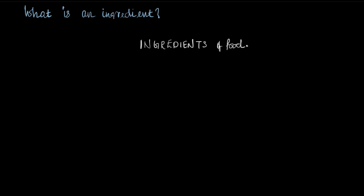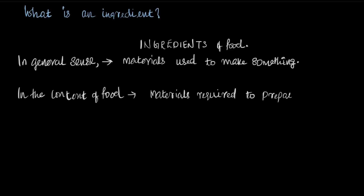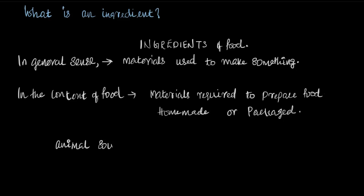What are ingredients? By now you must have some idea about what an ingredient is. In general sense, an ingredient is any material that we use to make something. In the context of food, ingredients are materials that are required to prepare a food dish, whether it is homemade or packaged. We obtain these ingredients from animal sources, from plant sources, and from other sources of food.